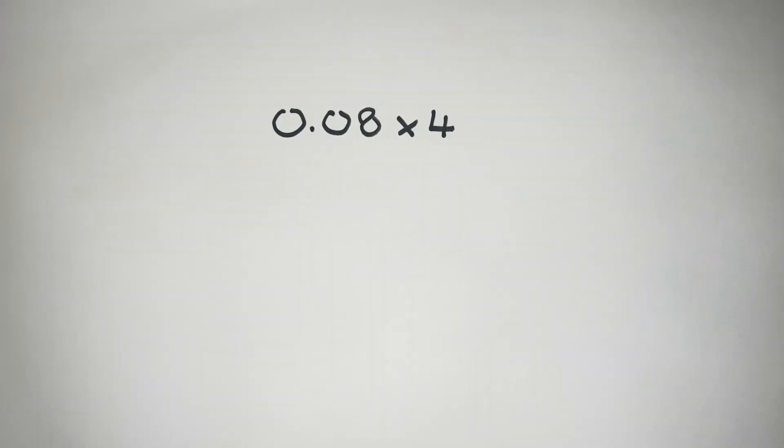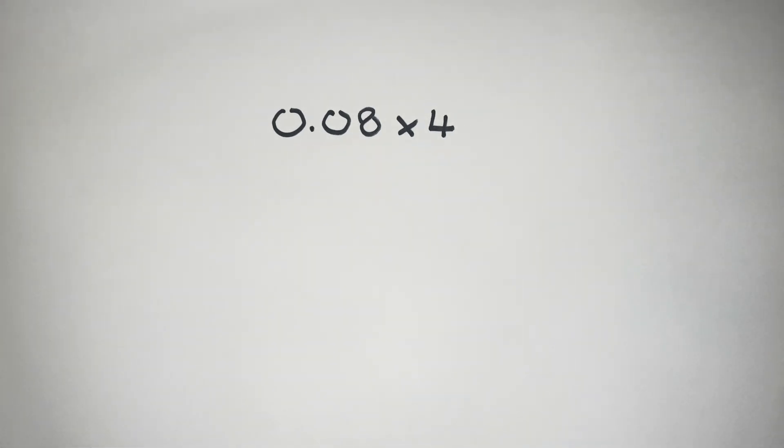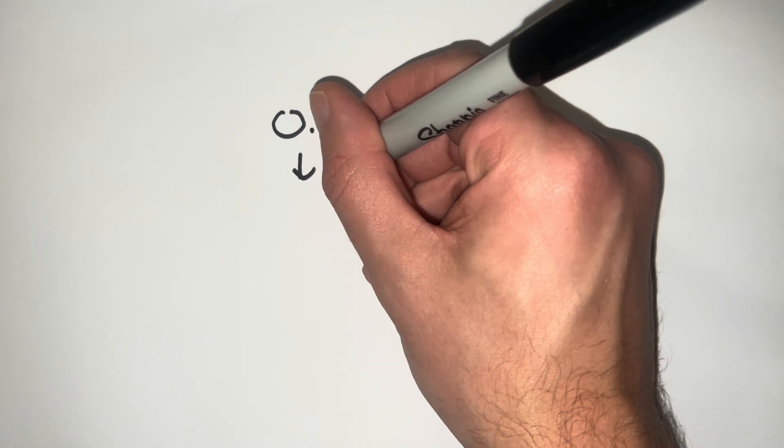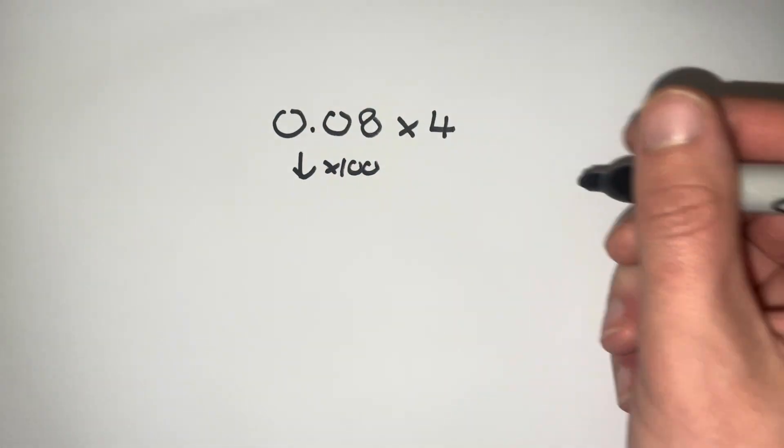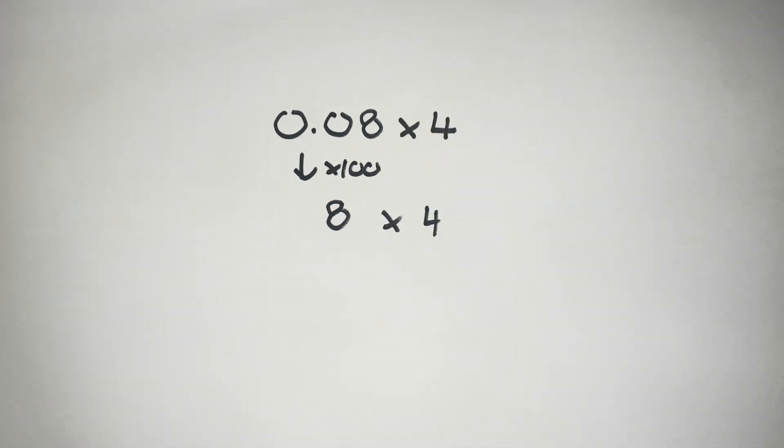If we look at one last example, 0.08 times 4, this time we'll see that we've got two decimal places in this first number. But again, we can still turn it into a whole number, but this time we just need to multiply it by 100. If we multiply this by 100, it gives us 8. So our new question is 8 multiplied by 4. Well, 8 times 4 is 32.